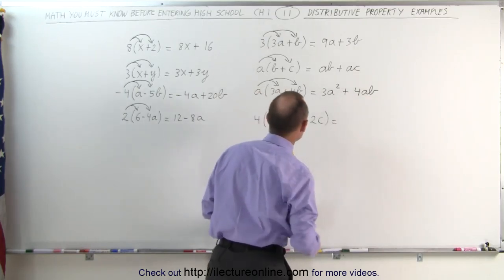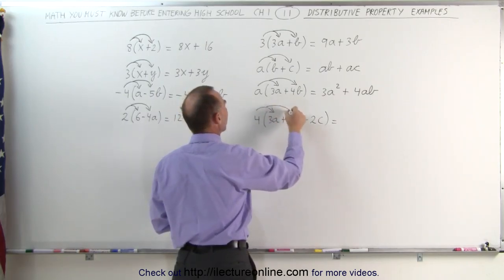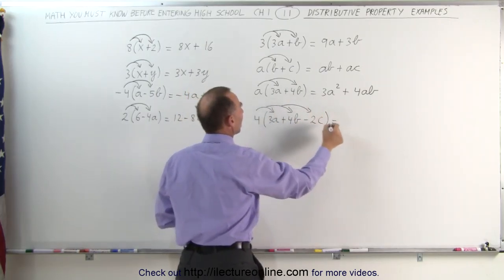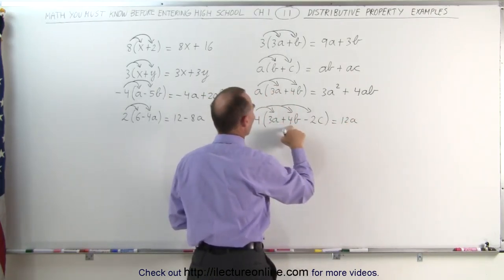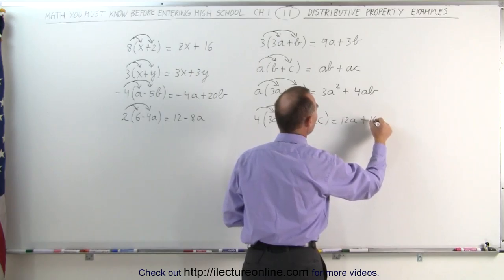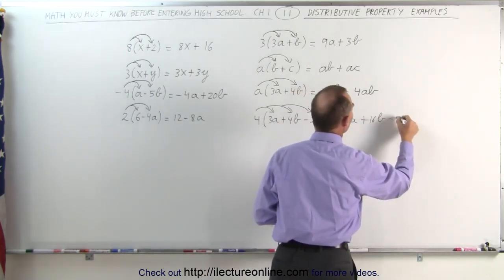Here we're going to distribute the four across all three terms in the trinomial. This becomes four times three a, which is 12 a, four times four b, which is 16 b, and four times the negative two c is a negative eight c.